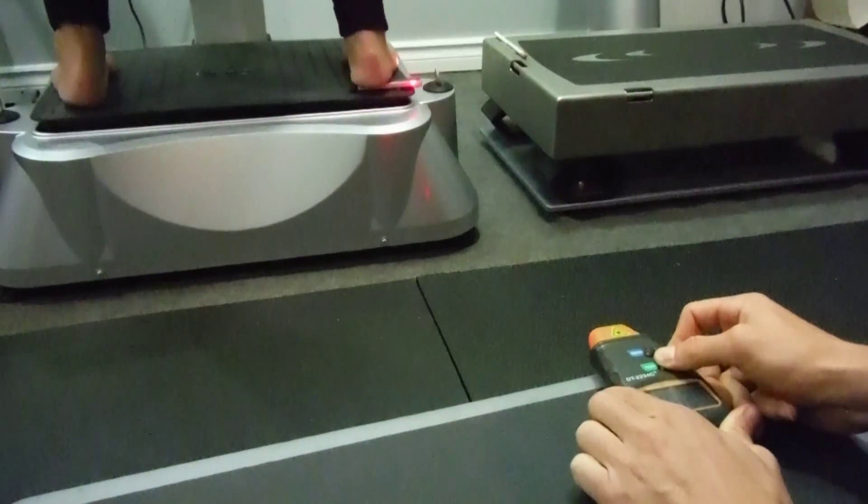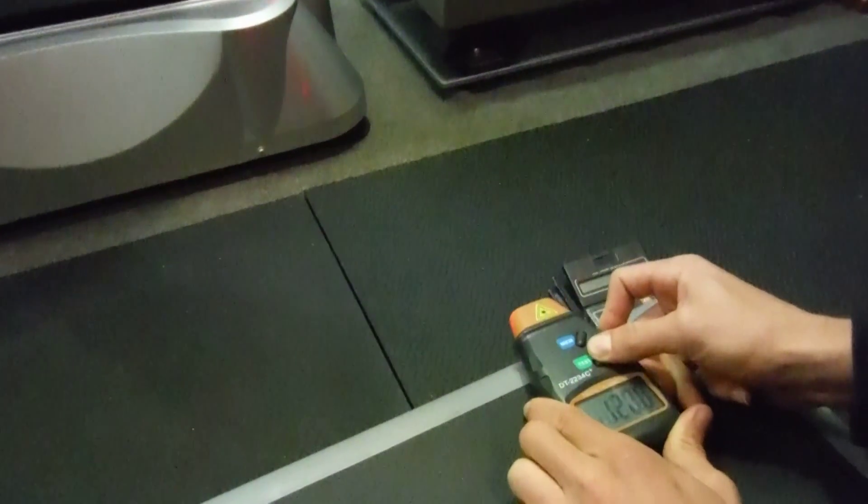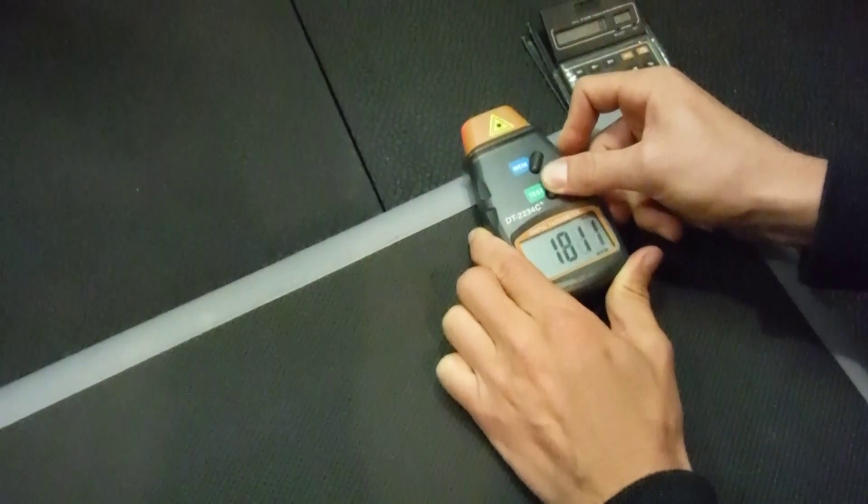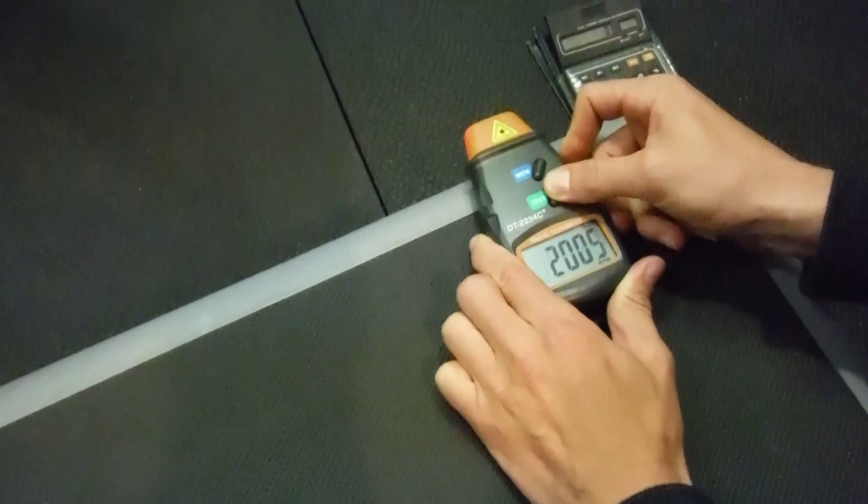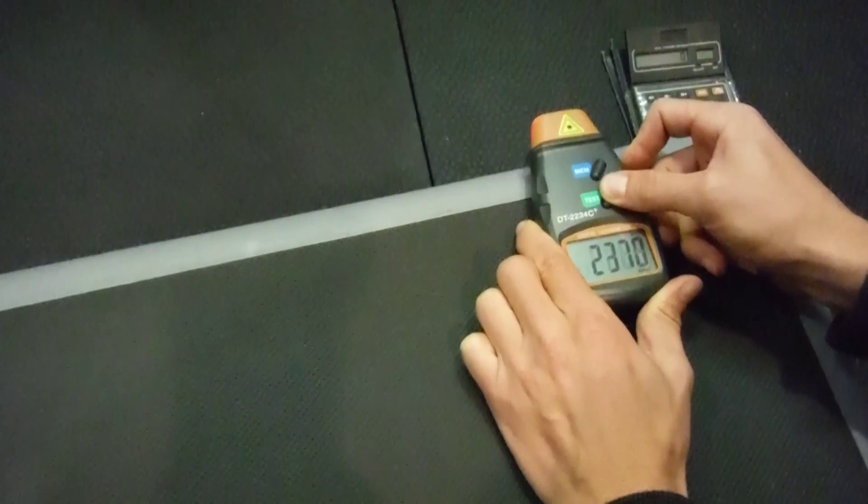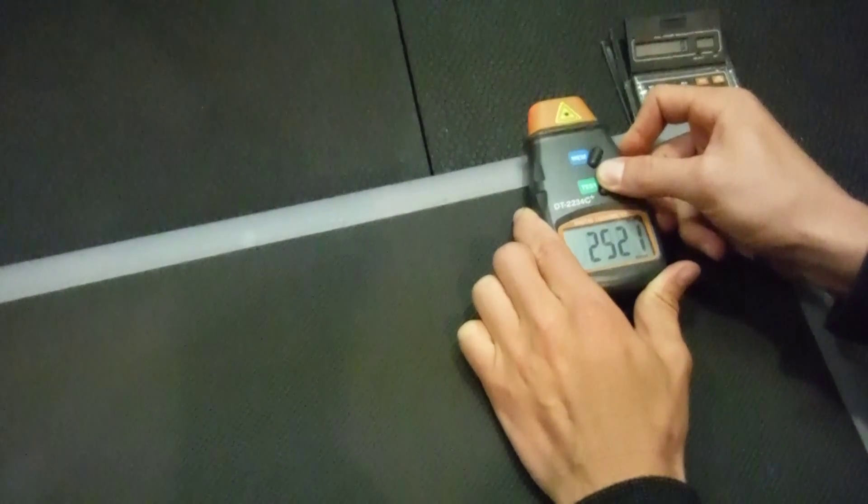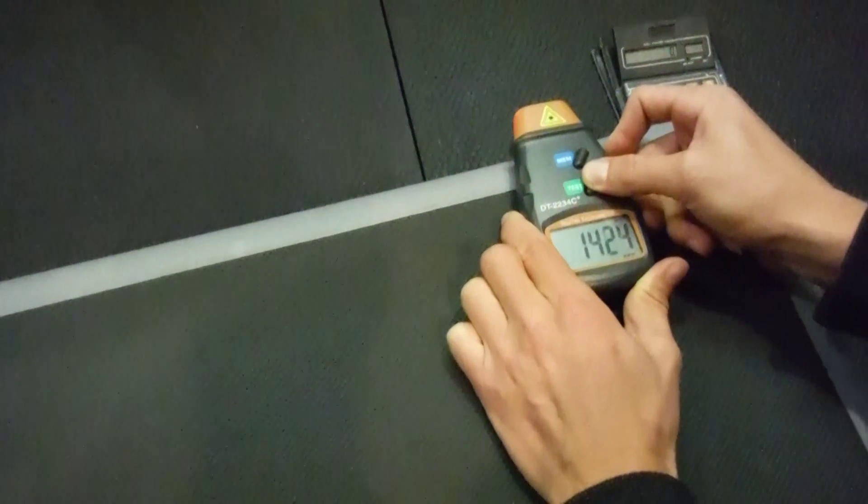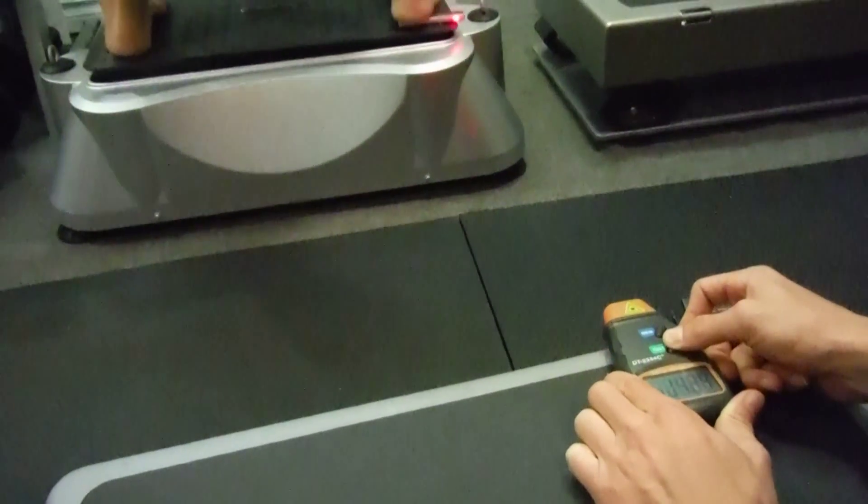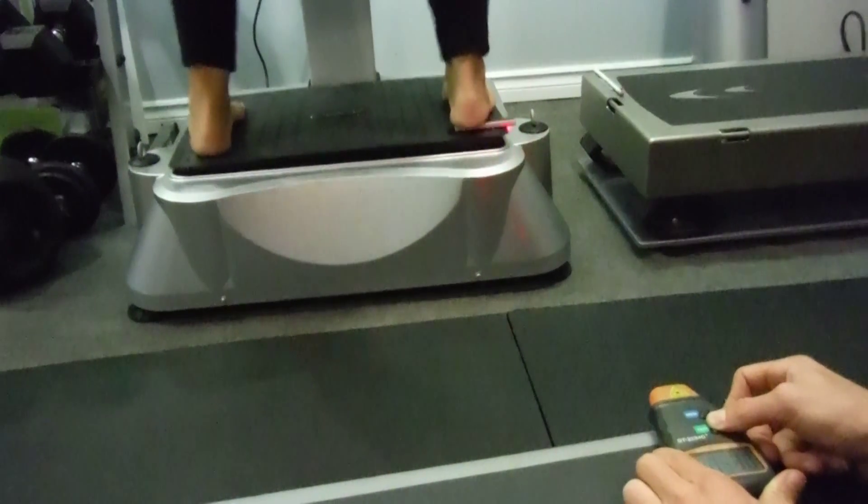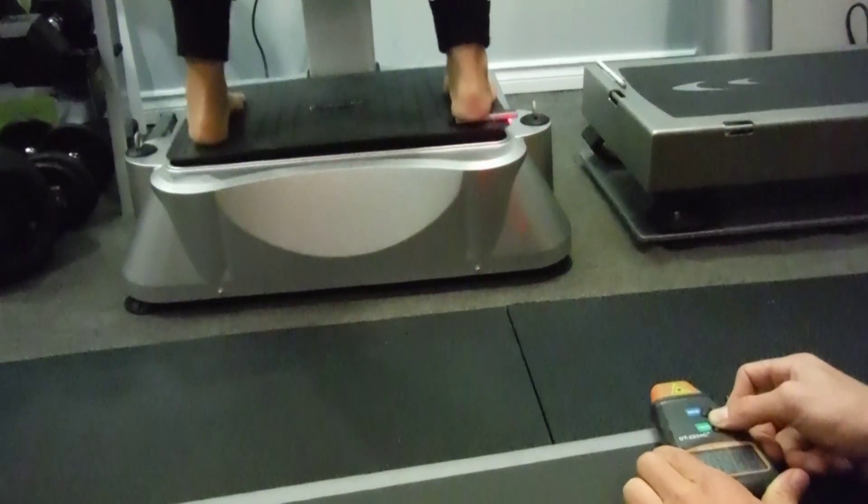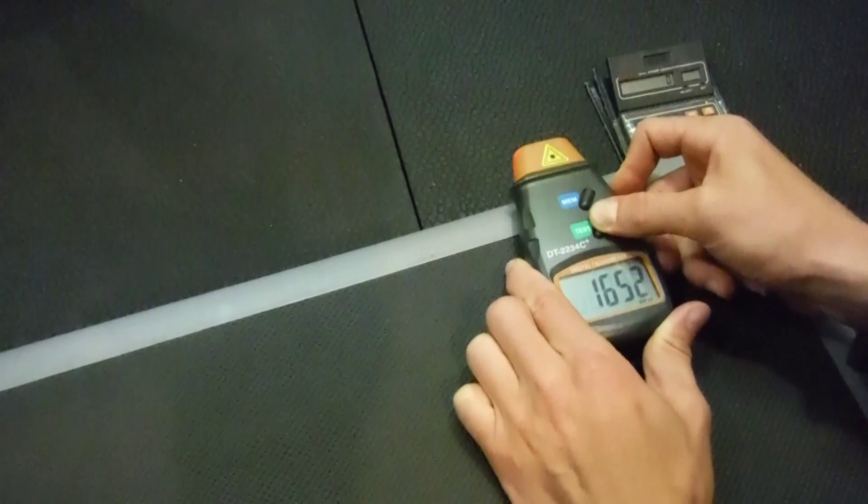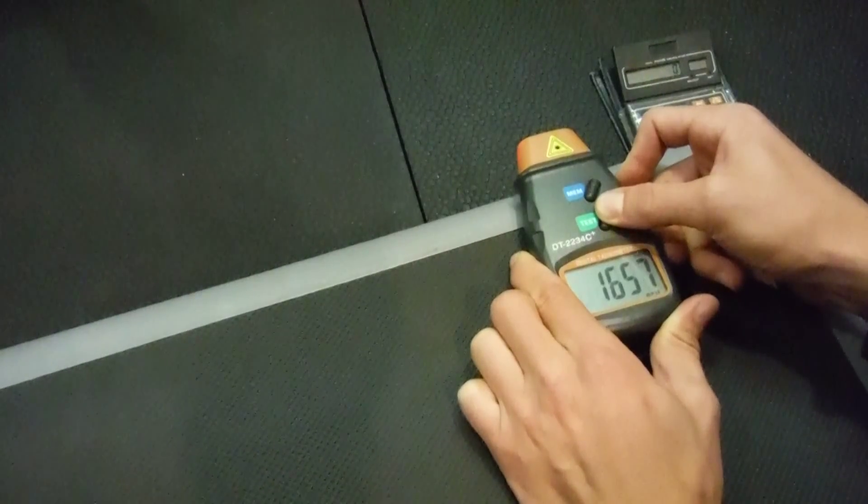Now, if we can zoom in right here on the tachometer, we'll be looking to get an average. It has an RPM, if you can see there. 1654, 1655, 1656, 1652. All right, we got our number.